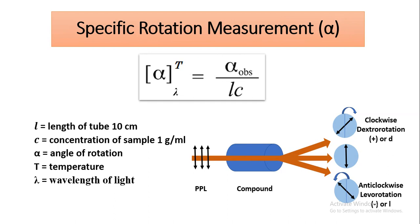Specific rotation is measured by the formula in which alpha represents the angle of rotation observed when the length of the tube is 10 centimeters and concentration is 1 gram per mL. T represents room temperature and lambda represents the wavelength of light used. If rotation is clockwise, compounds are dextrorotatory, denoted with a positive sign or small d. If anti-clockwise, compounds are levorotatory, denoted with minus or small l. If the compound is optically inactive, there will be no rotation.